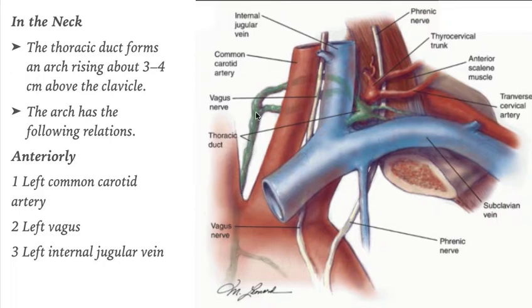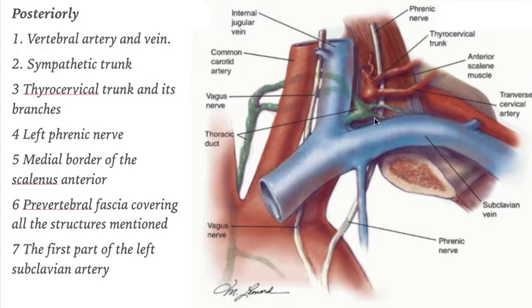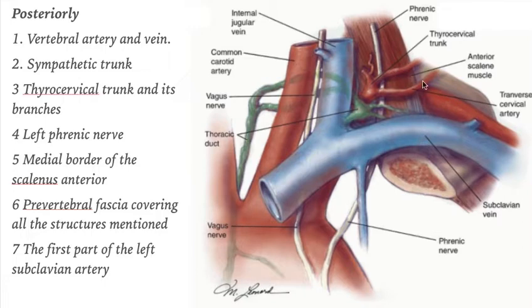In the neck, the thoracic duct forms an arch rising about three to four centimeters above the clavicle. The arch has the following relations: anteriorly the left common carotid artery, the left vagus, and the left internal jugular vein; posteriorly the vertebral artery and vein, the sympathetic trunk, the thyrocervical trunk, the medial border of scalenus anterior, the prevertebral fascia, and the first part of the left subclavian artery.